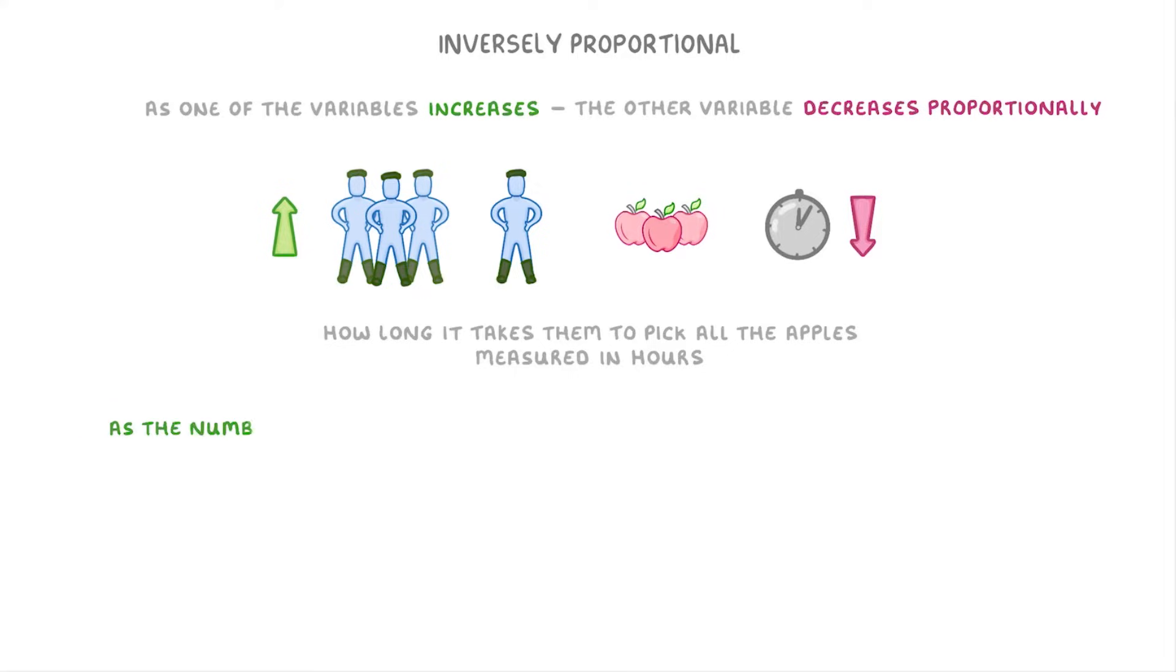So in this case, as the number of farmers increases, the time taken decreases. And the fact that it's proportional means that they increase and decrease at the same rate.